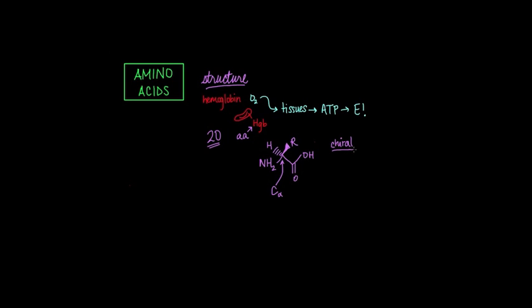What does a chiral carbon mean again? Well, a chiral carbon is a carbon atom that has four unique groups bound to it. So if we take a look at this carbon, we can see that one group that's bound is the amino group.